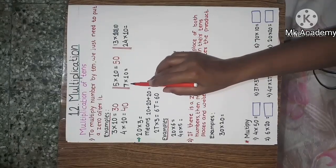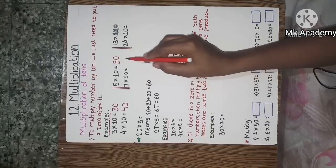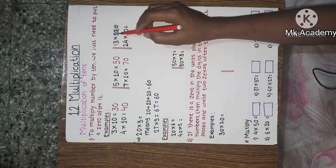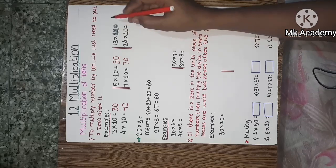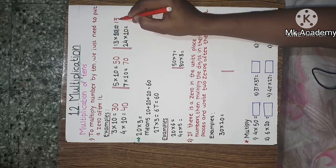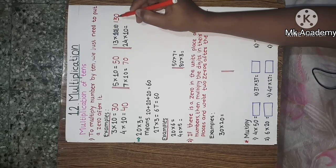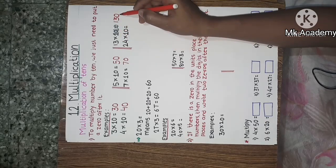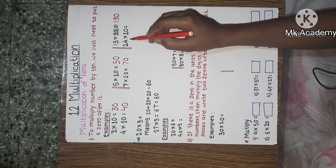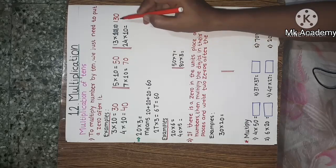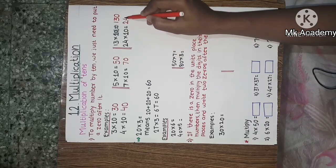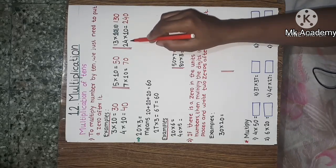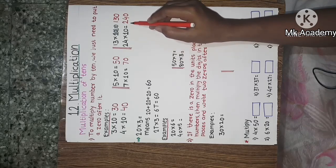Next, 7 multiplied by 10 is equal to 70. See another example: 13 into 10. We write down the number 13 first and then put 0 after it — we get the answer 130. So 13 into 10 is equal to 130. Now 24 into 10: we write down 24 and put 0 after it to get 240. So 24 multiplied by 10 is equal to 240.